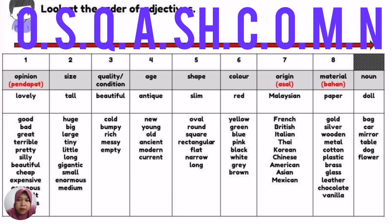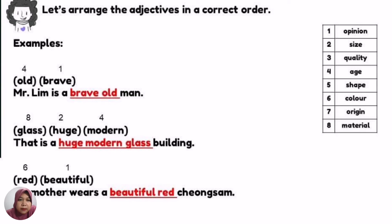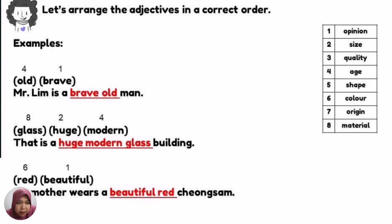Let's look at the first example. The adjectives given are 'old' and 'brave.' Using OSCASHCOM — 'brave' is an opinion and comes first, 'old' is age and comes after. So the correct sentence is: 'Mr. Lim is a brave old man.' If you don't know the order, you might write 'Mr. Lim is an old brave man' — which is incorrect.